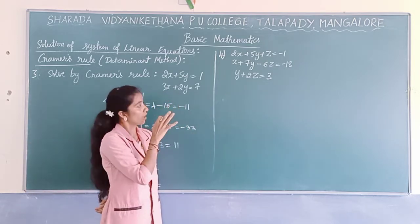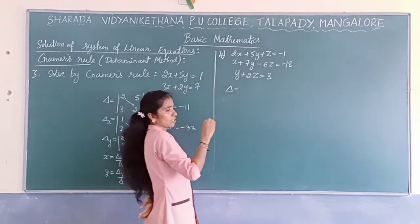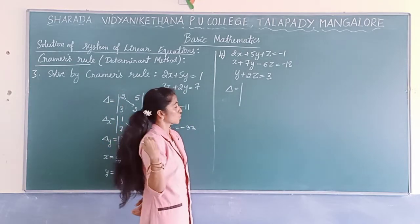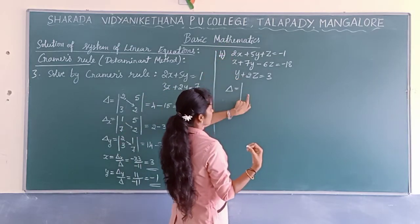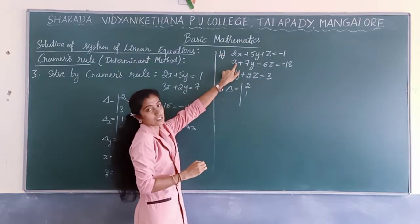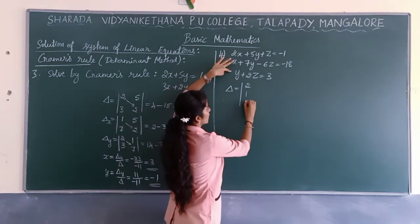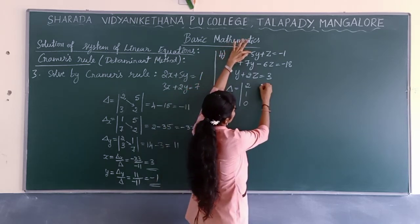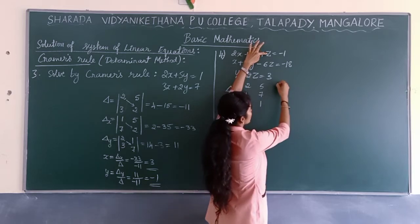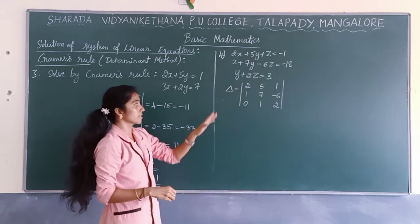Now let us solve simultaneous equations with three variables. For delta, write coefficients of x in the first column: 2, 1, 0 (the third equation has no x term, so coefficient is 0). Coefficients of y in the second column: 5, 7, 1. Coefficients of z in the third column: 1, -6, 2.